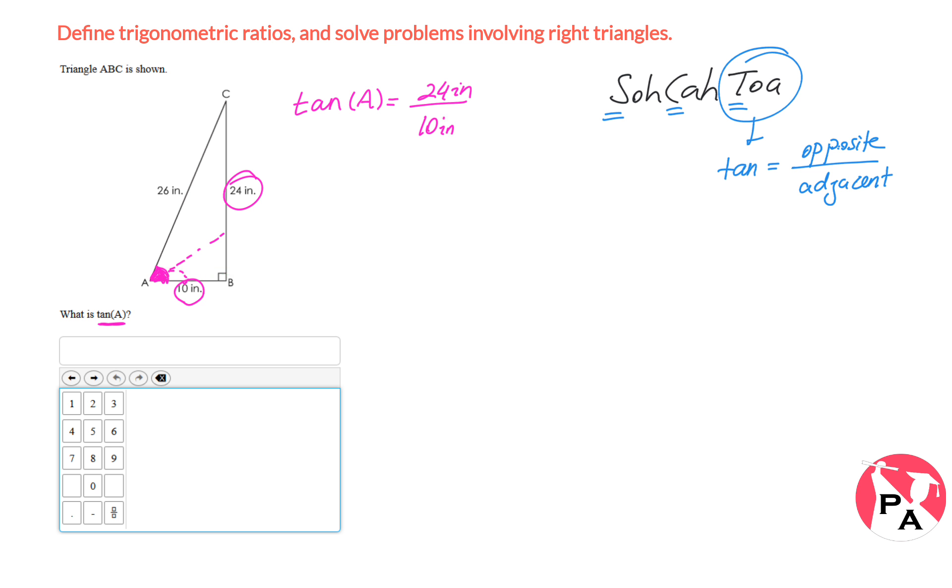The adjacent side can be a problem for most students. So here's an easy way. The one that is across from the angle is the opposite side. The longest side across from the 90 degrees is the hypotenuse. The other one is going to be the adjacent. So as long as you know what the opposite side looks like and what the hypotenuse looks like, it's going to be easier to locate the adjacent side.